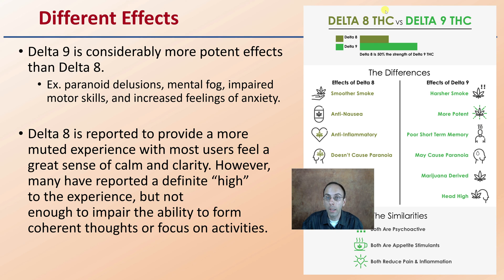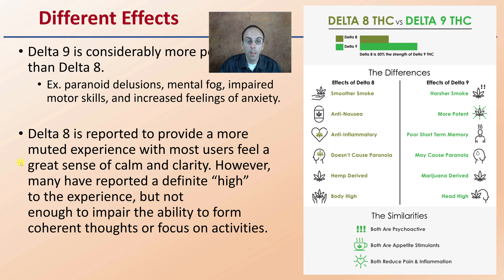There are different effects from Delta-8 THC versus Delta-9 THC. Delta-9 has considerably more potent effects than Delta-8, including paranoia, delusions, mental fog, impaired motor skills, and increased feelings of anxiety. In comparison, Delta-8 is reported to provide a more muted experience, with most users feeling a greater sense of calm clarity. Many have reported a definite high, but not enough to impair the ability to form coherent thoughts or focus on activities.